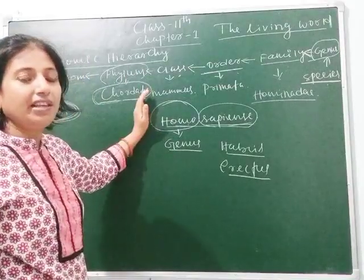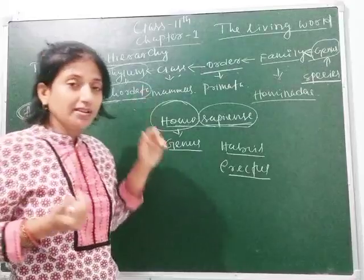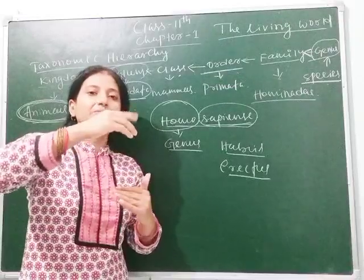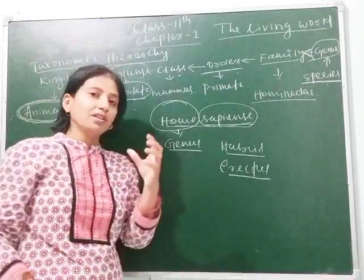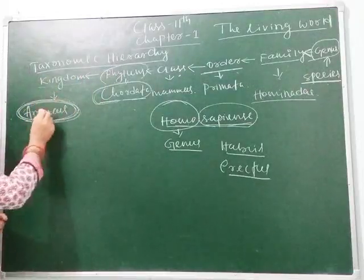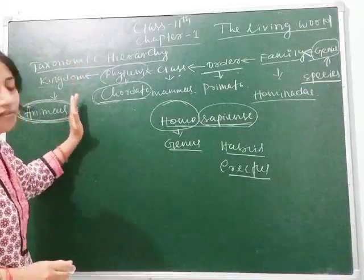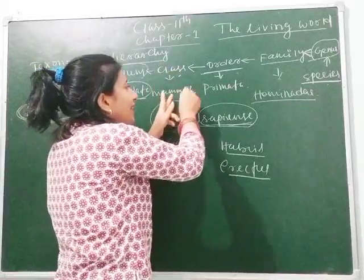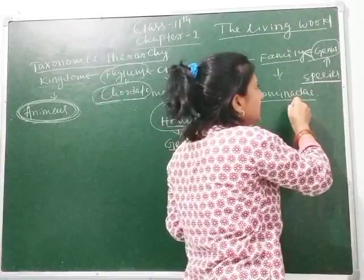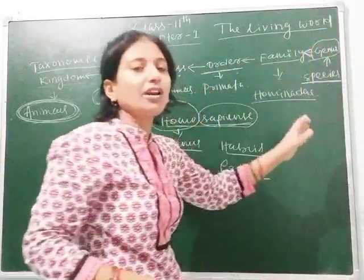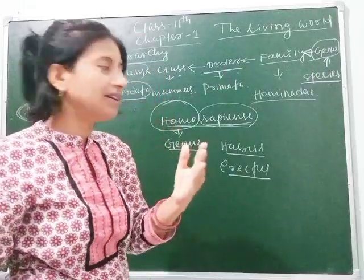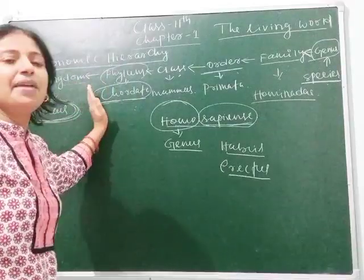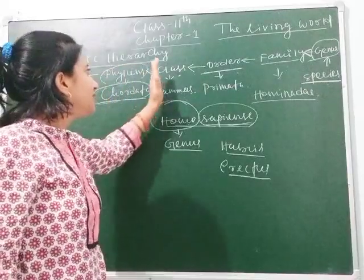Suppose you are attending an exam. One hundred students appear. The exam has different levels — first level, second level, third level, and so on. Some students qualify the first level, but for the second level five students are out, only 95 remain. For the next level 80 remain, then 70, then 60, then 50, and so on. At last, only a few students qualify. Exactly like this, when we move from higher to lower taxa, many animals are gradually eliminated because of mismatching characteristic features.